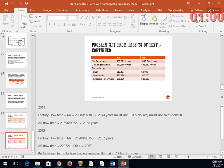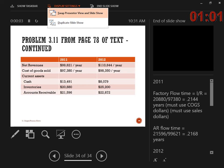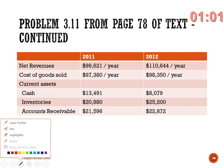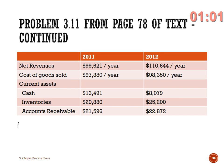A student indicates she's confused, so let's go back and take a look at it again. If I'm trying to do factory flow time for 2011, I need inventory divided by throughput. When we talk about factory, we're dealing in cost dollars — so we use the cost of goods sold for throughput.